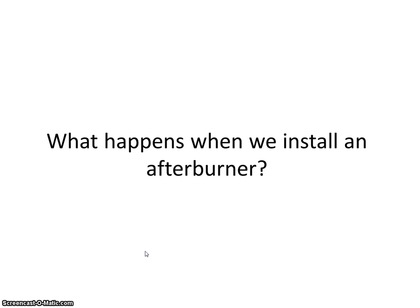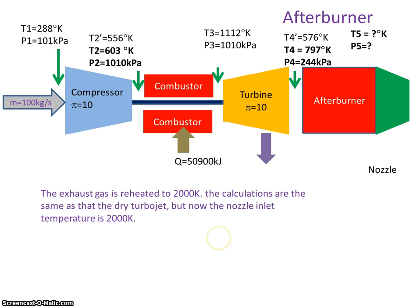So we're going to look at the ideal analysis and this time we're going to consider what happens if we install an afterburner at the rear of the engine. There's our analysis to date and we've put in an afterburner unit and we're going to assume that we can heat the gases in here to 2000 degrees Kelvin. And we're going to see how much thrust we produce and what fuel burn we're going to use.